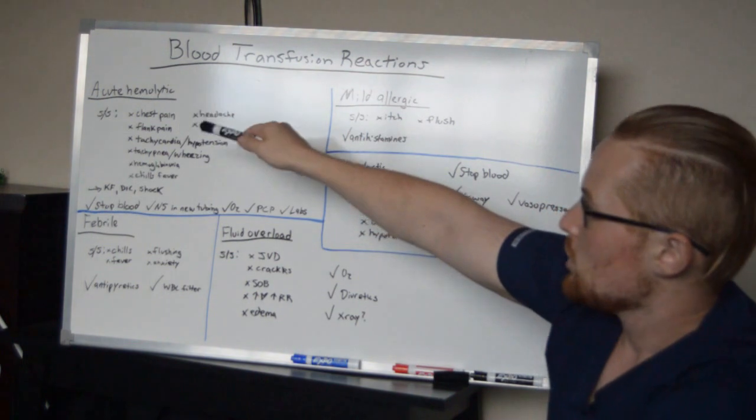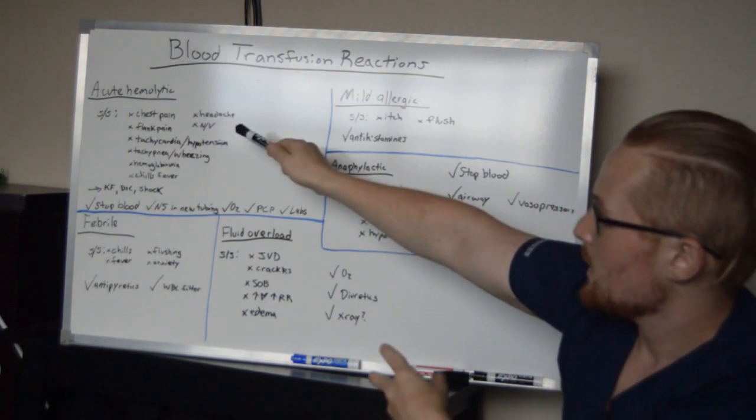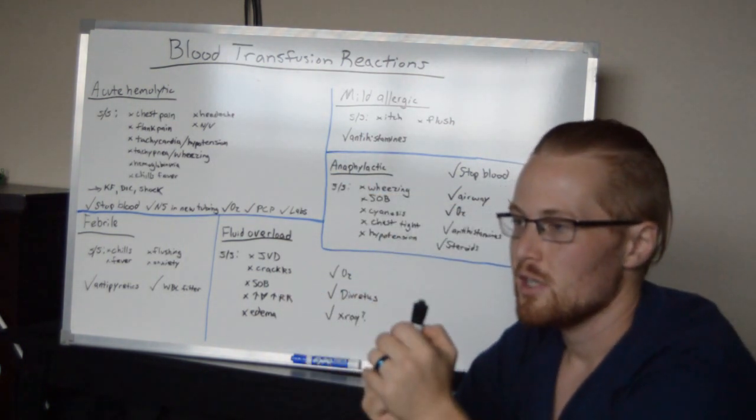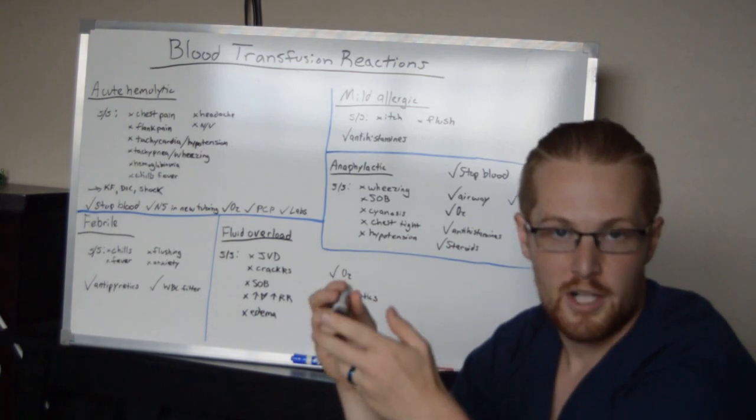So acute hemolytic, acute meaning it's sudden, hemolytic meaning hemo the blood lytic breaking down. The blood is breaking down. So this is typically, you can see this if there's a compatibility issue, something wrong with the ABO or the RH antigen.